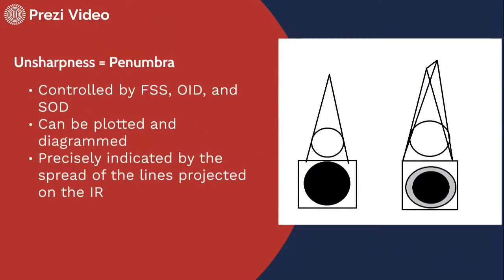It's controlled by the focal spot size, the object to image receptor distance, and the source to object distance. So it can be plotted and diagrammed — it's easy to just draw these kinds of drawings and see.